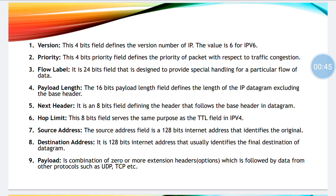Version has four bits allocated to it, and since this is IPv6, it will accumulate six. Coming to priority, again bits allocated are four bits. Why is priority required? Some packets need to have higher priority, some packets need to have lower priority, so higher or lower priority can be set with this field.